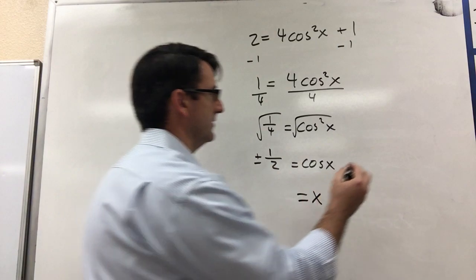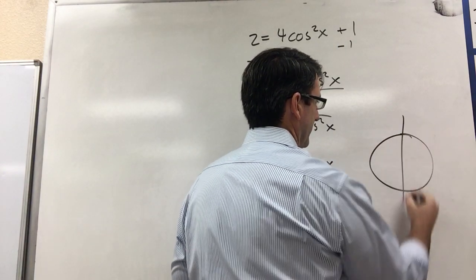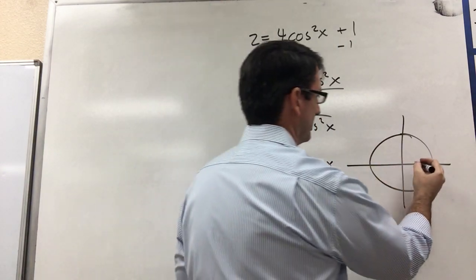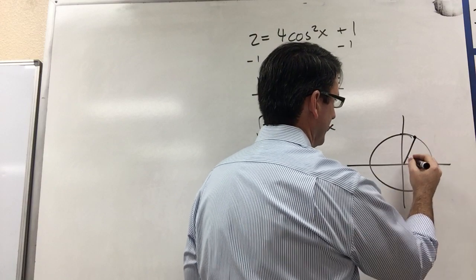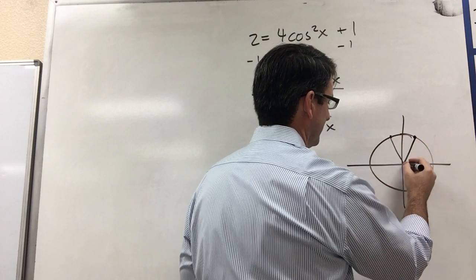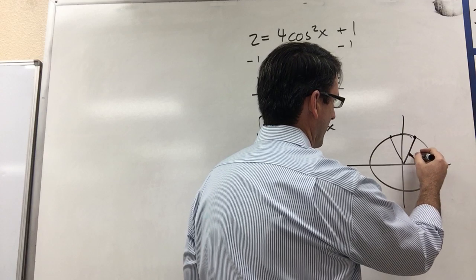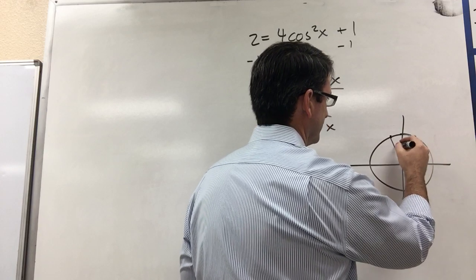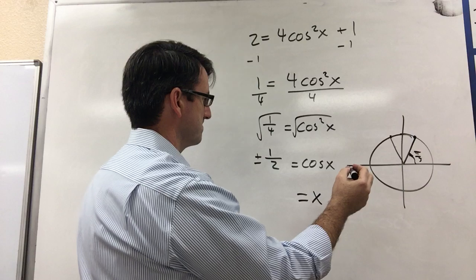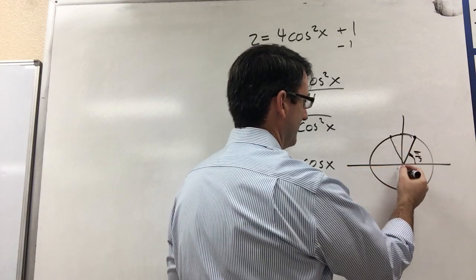And so we go to our unit circle and we're going to see cosine is equal to 1 half up here at this angle. At this angle, that's π over 3. This is going to be 2π over 3. That would be negative 1 half there.